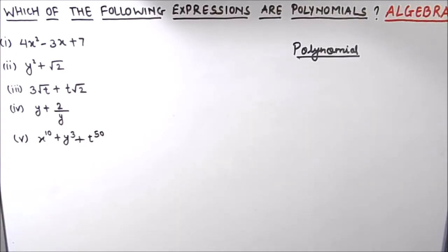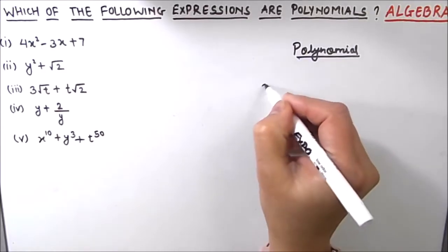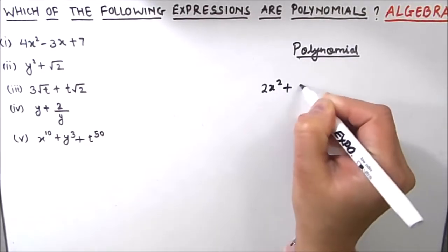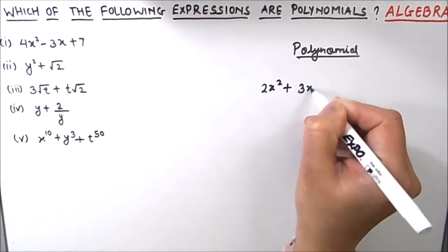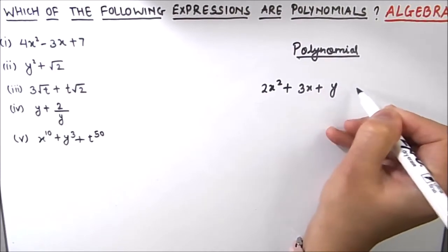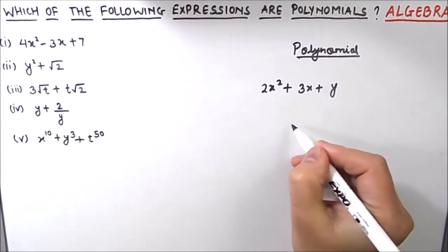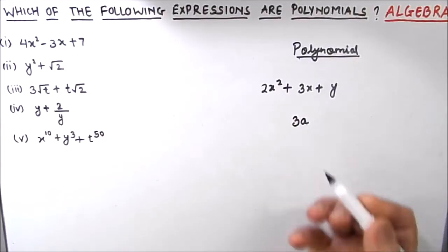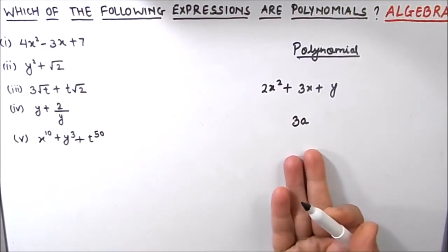According to the definition, a polynomial is a mathematical expression involving a sum of powers in one or more variables multiplied by coefficients. For example, we have 2x squared plus 3x plus y — this is a polynomial. Also we can have a single term, 3a, and it is also a polynomial.